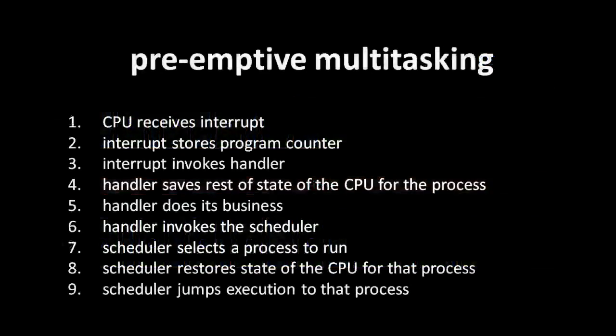Laid out in full, this scheme, called preemptive multitasking, works like this. First, the CPU receives some hardware interrupt. Then the interrupt stores the program counter so that the interrupted code can resume later. The interrupt invokes the appropriate handler. The handler saves the state of the other CPU registers so that the interrupted process can be resumed later. The handler does whatever business the interrupting device needs. The handler then invokes the scheduler, which selects a process to run, restores the CPU registers to the state they were in when that process was last running, and finally jumps execution to that process.